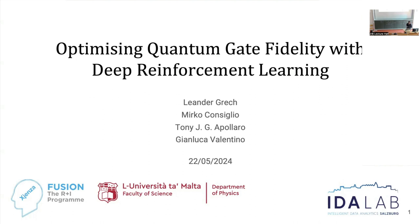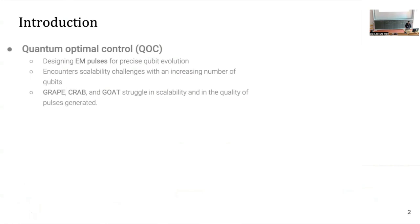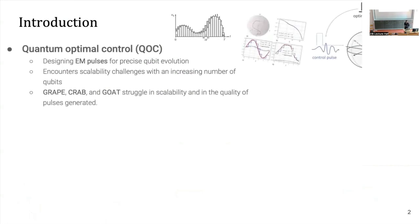We are trying to use the latest advancements in reinforcement learning to optimize quantum gates. As a brief introduction — since most of you know about quantum optic control — it deals with designing pulses for precise qubit evolution. There exist many algorithmic approaches and numerical optimizers to obtain the gates that we want to optimize.